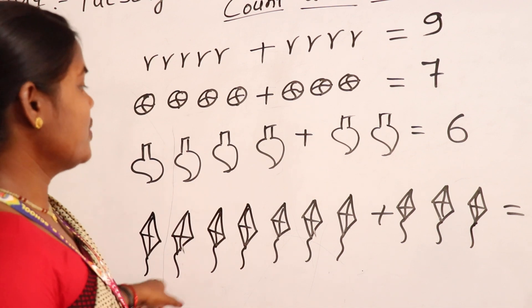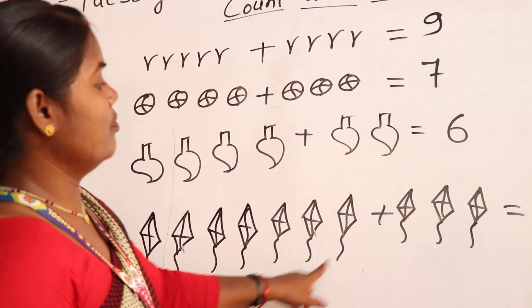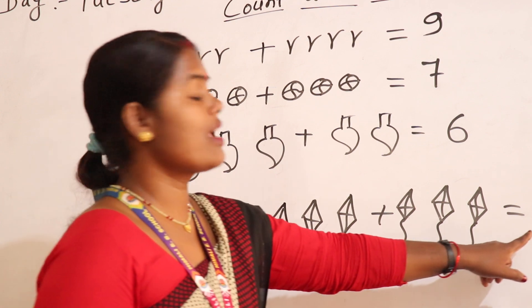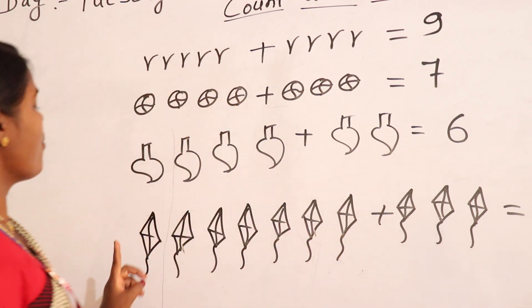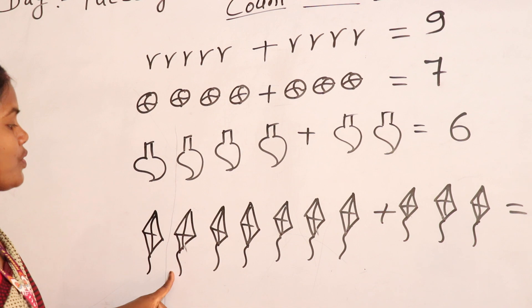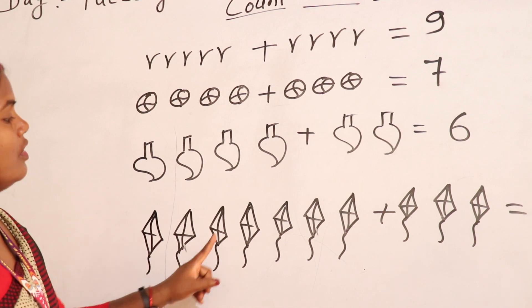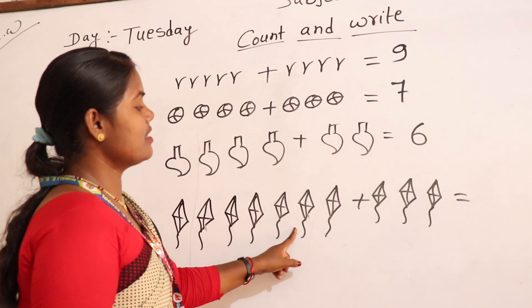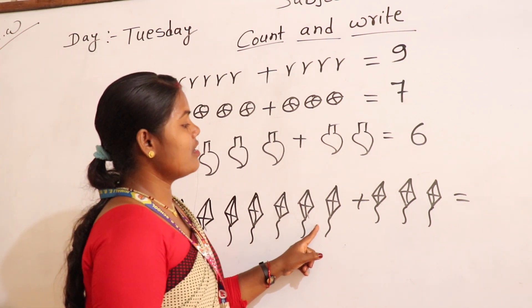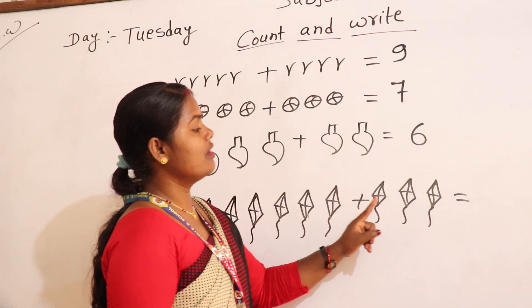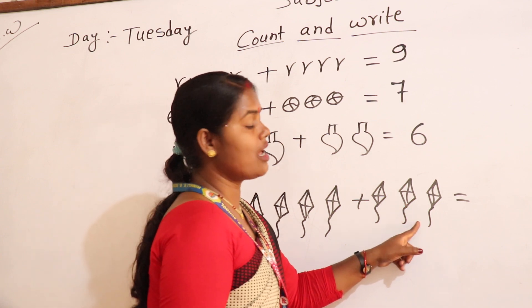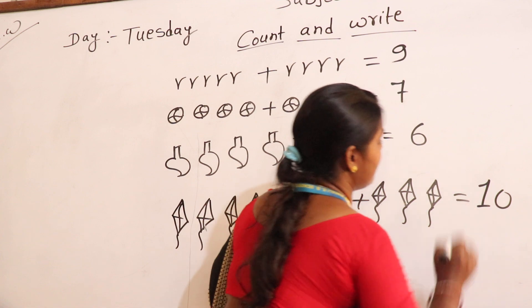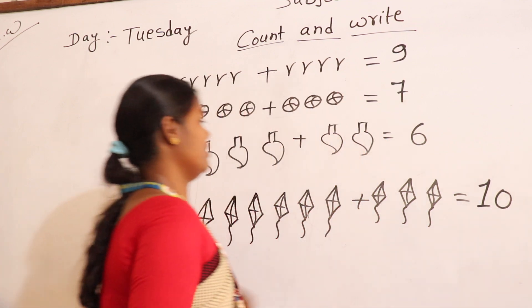There are 7 cards plus 3 cards. Total cards are 1, 2, 3, 4, 5, 6, 7, 8, 9, 10. Total is 10.